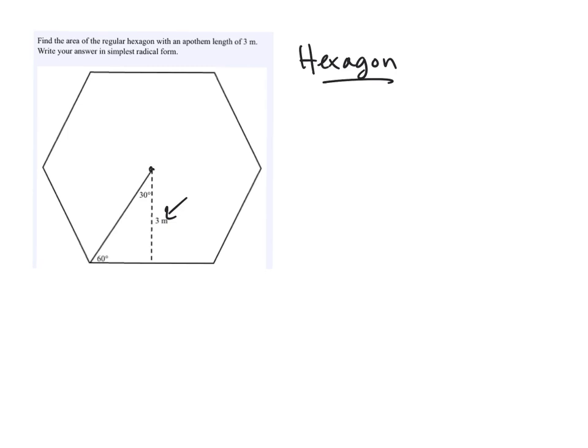This length from the center, the center of the inscribed or circumscribed circle, this length here is called the apothem, and it turns out the area is one-half the apothem times the perimeter.